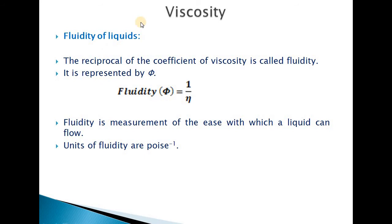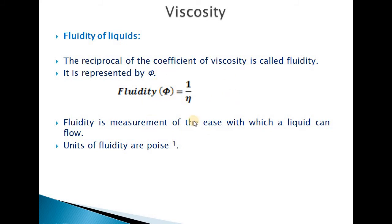Fluidity of liquids is the reverse of viscosity. The reciprocal of the coefficient of viscosity is known as fluidity, represented by the symbol φ, where φ = 1/η. Fluidity is thus a measure of the ease with which a liquid can flow. Its units are the inverse of the coefficient of viscosity, i.e., poise⁻¹.